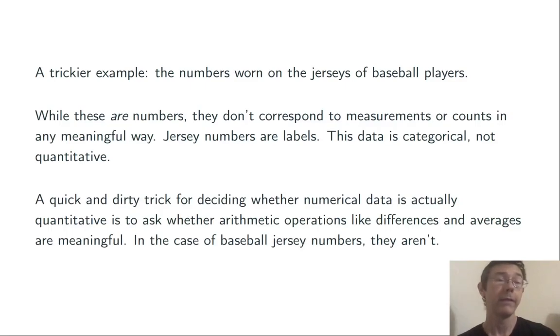A quick and dirty way to determine whether this is the case when you see data that consists of numbers is to ask whether it makes sense to do numerical operations. In particular, think about an average. While it is possible to take the average jersey number of players on a baseball team, that average won't have any real meaning. It won't tell you anything. And that's a tip-off that you're actually dealing with categorical data.